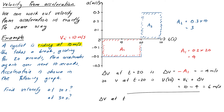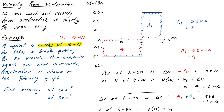To find velocity at 30 seconds, we calculate the overall change in velocity over the entire 30-second interval. The first area was negative 4. The second area, above the axis, has a base of 10 seconds and height of 0.3, corresponding to a velocity change of positive 3 meters per second. So the overall change in velocity is negative 4 plus 3 equals negative 1 meters per second. The final velocity is therefore 10 plus negative 1 equals 9 meters per second.